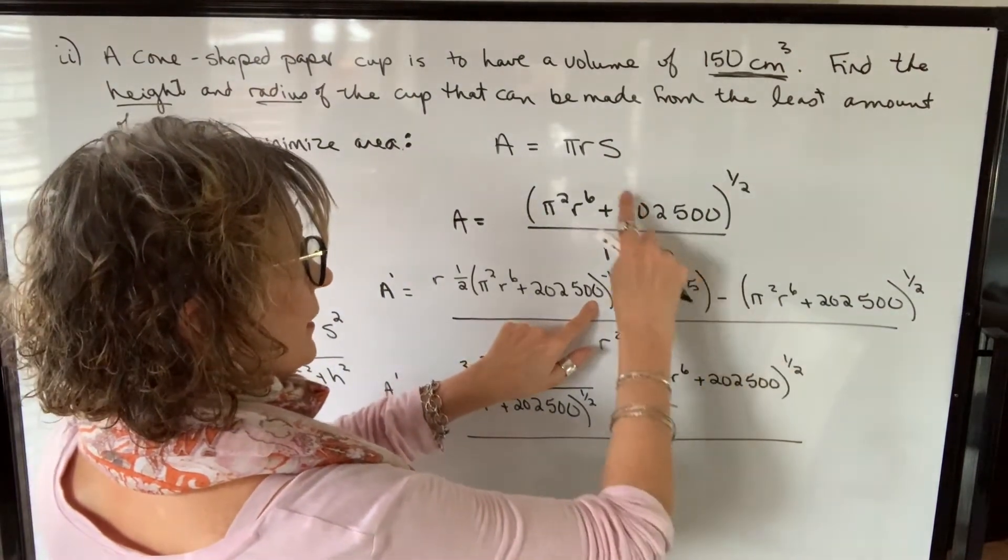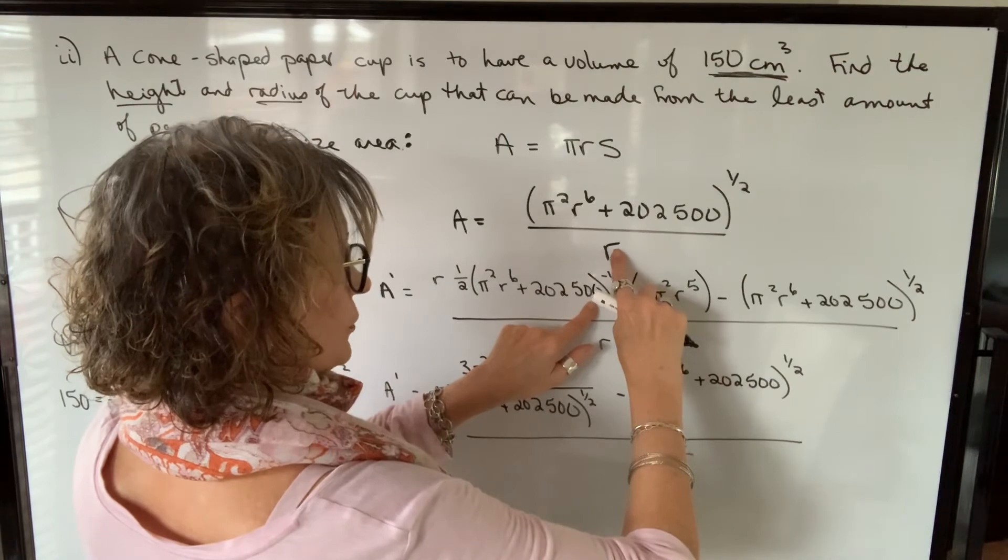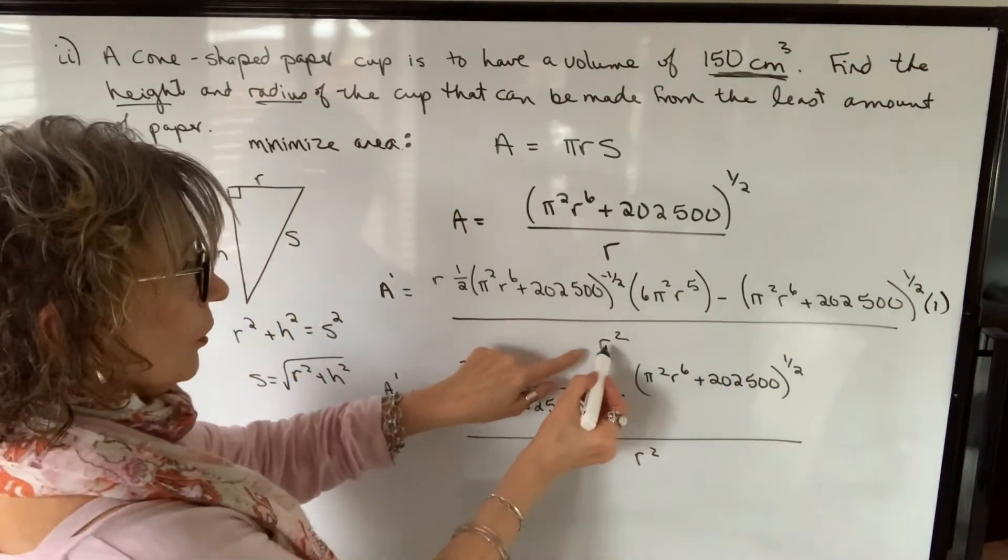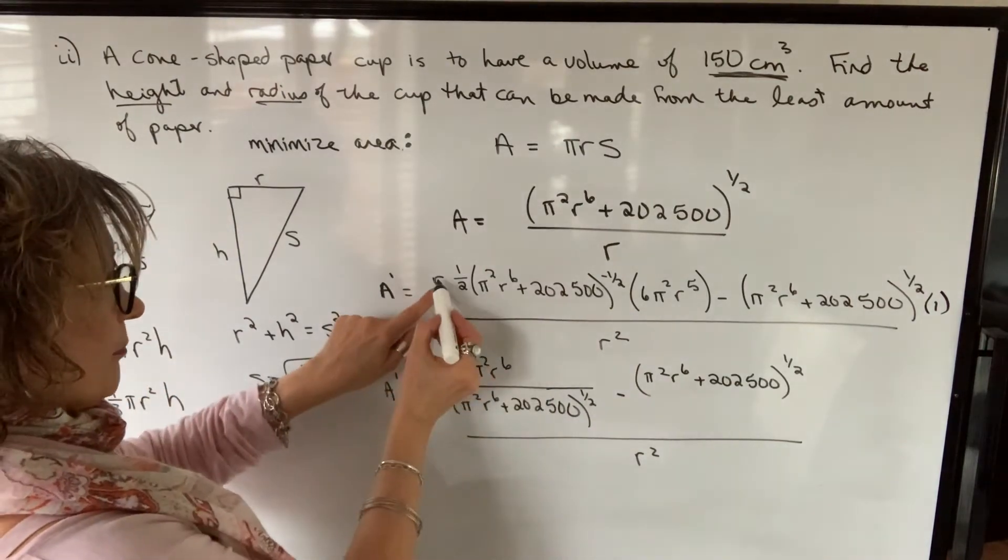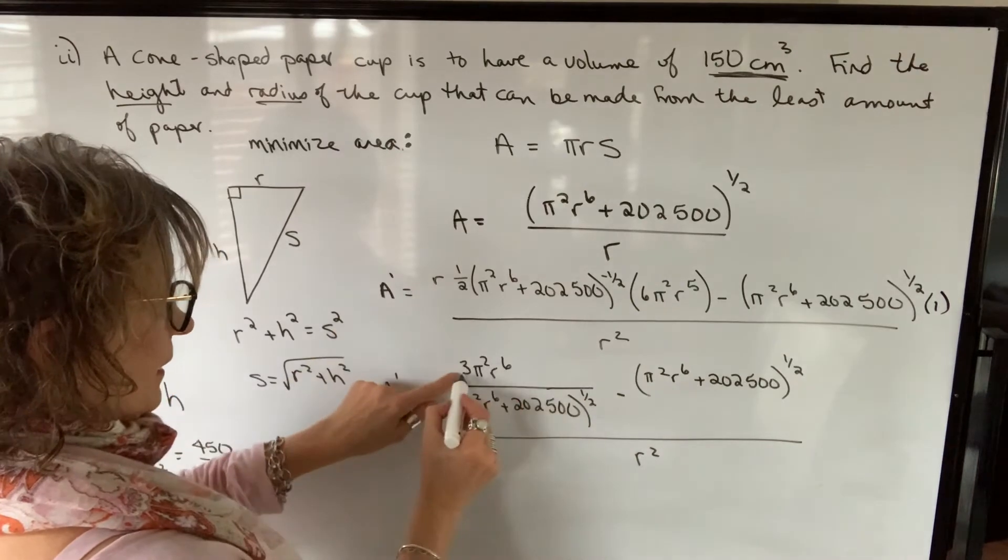Then it's minus the numerator times the derivative of the denominator. The derivative of r will just be a one all over r squared. I'm going to combine r times one half times 6 pi squared r to the fifth to get 3 pi squared r to the sixth.